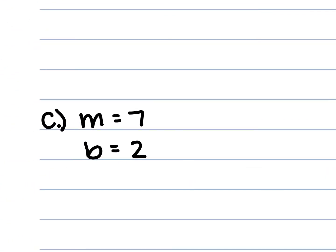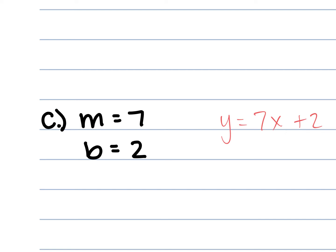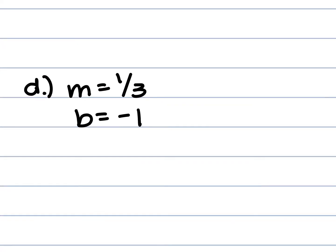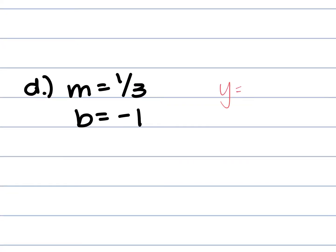If m was seven and b was two, David — what do you get? Y equals seven x plus two. You guys with me? Solucci, what's letter D?